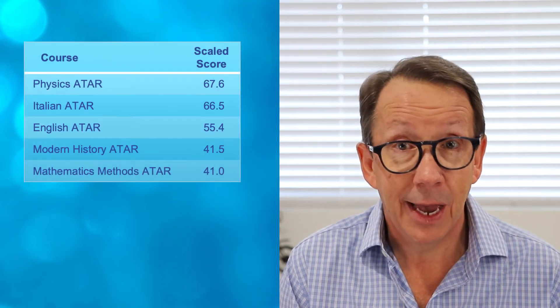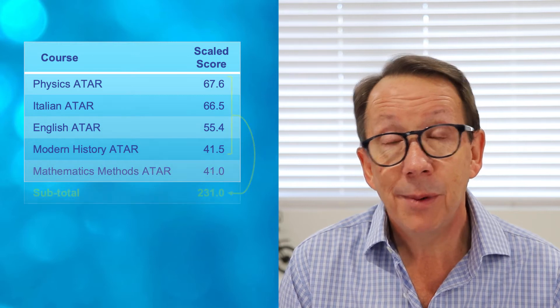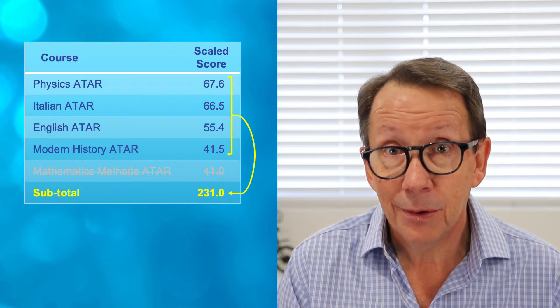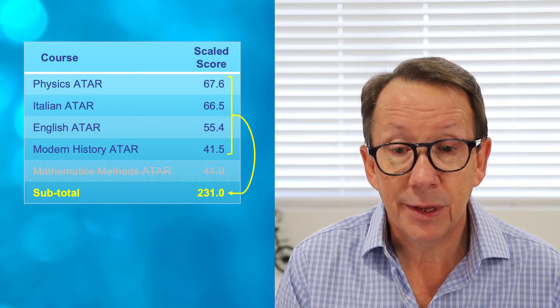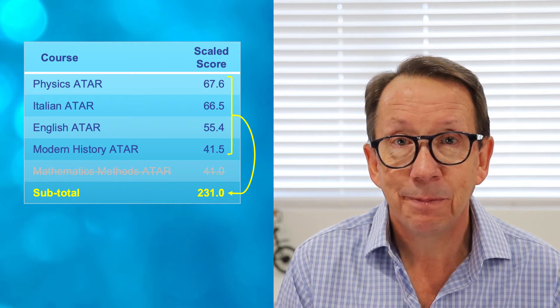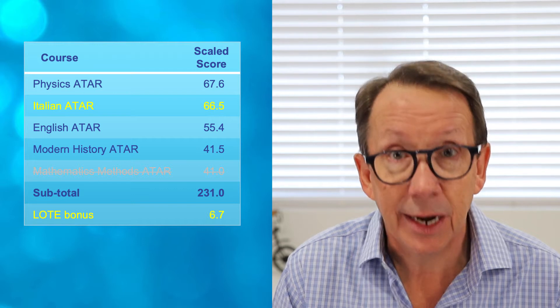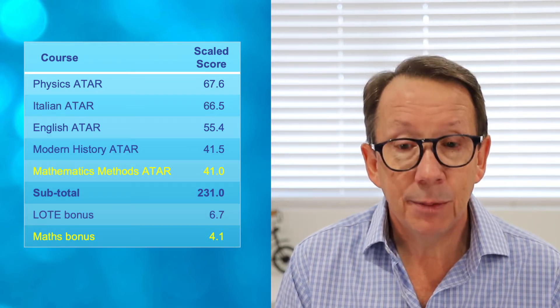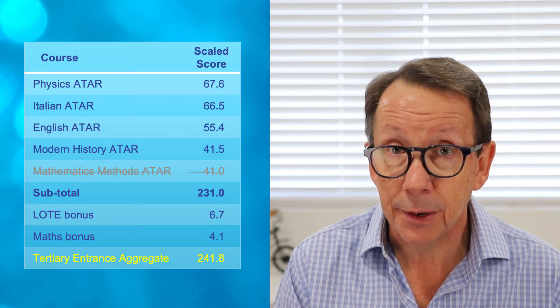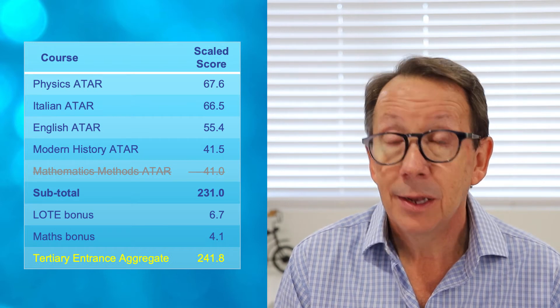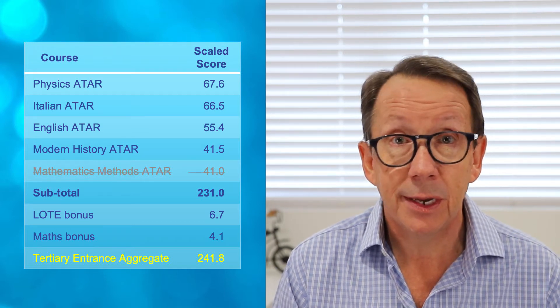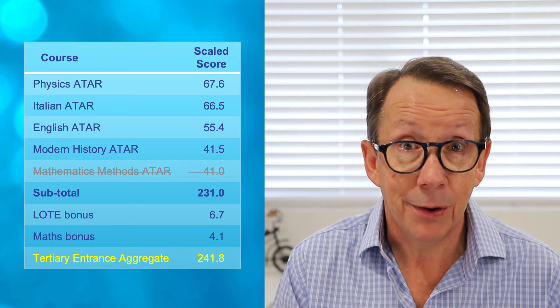Let's work through an example. Here's someone who has five ATAR subjects, so five scaled scores. Remember we only count the top four, so in this example we wouldn't include their Maths Methods score, which is their lowest, in the calculation of the aggregate. They end up with a subtotal of 231 when we add the other four together. But because this person has done a language other than English — Italian — and Maths Methods, they get the 10% bonuses for those scaled scores added to their aggregate. Even though Maths Methods wasn't one of their top four subjects, they still get the benefit of the bonus. So this person ends up with an aggregate of 241.8.